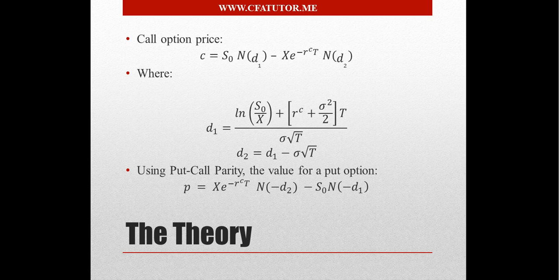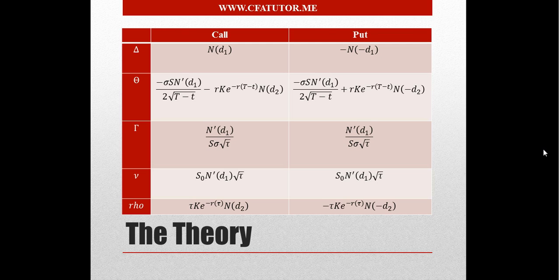This is what we know from the Black-Scholes model — there's a whole video and file that shows how to use these formulas. This part covers the call option price and put option price under Black-Scholes. Those are the Greeks: we have five Greeks here — Delta, Theta, Gamma, Vega, and Rho.